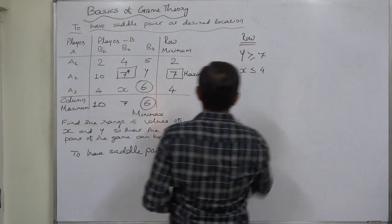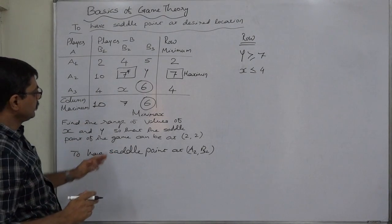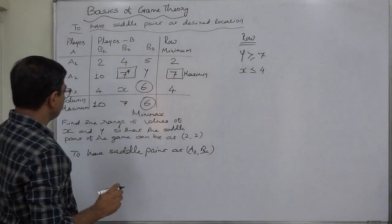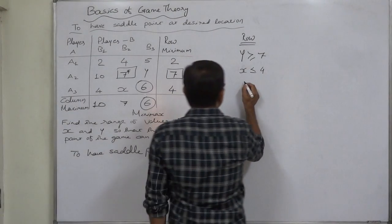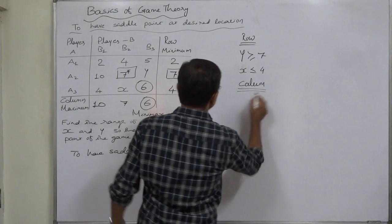In first row there should not be any change because x and y appear in the second and third row respectively.